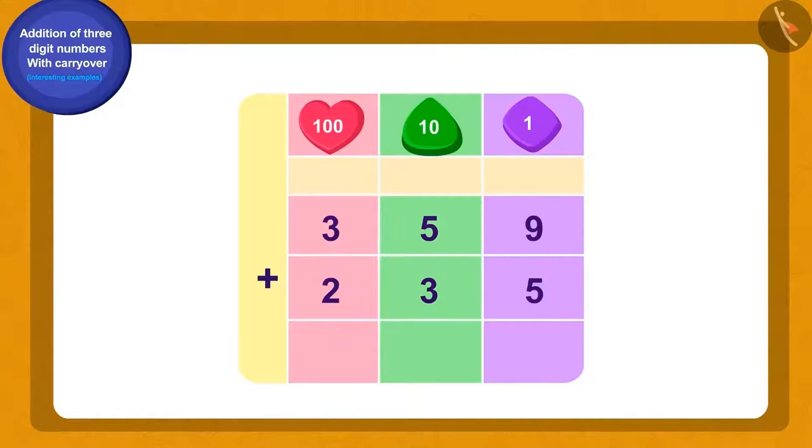Add 9 and 5 and what do we get? 14. How do we write 14 using carry-over? Alright, we will write 4 of the number 14 in the ones place and then carry-over 1 to the tens place like this.